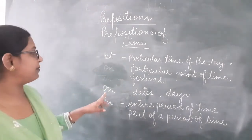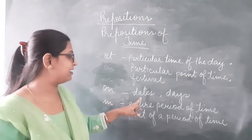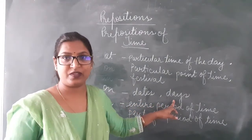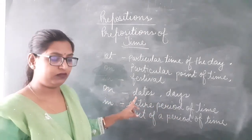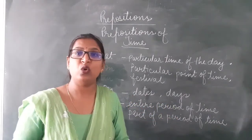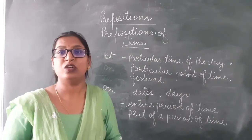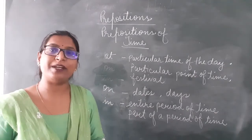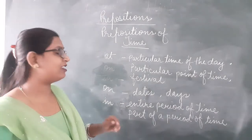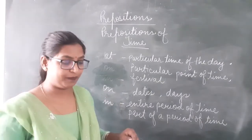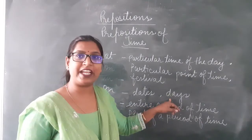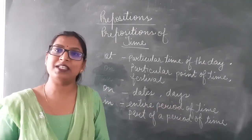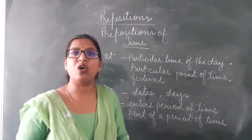Then comes the preposition 'on'. 'On' indicates dates and days. For example, on the 25th of December, on 16th October — to indicate a particular date, we use the preposition 'on'. We also say on Monday, on Tuesday, on Wednesday.